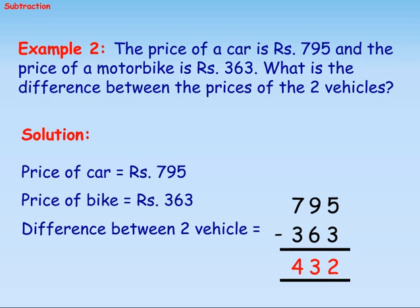Example 2: The price of a car is 795 rupees and the price of a motorbike is 363 rupees. What is the difference between the prices of the two vehicles? Solution: Price of a car equals 795 rupees. Price of a bike equals 363 rupees. Difference between two vehicles equals 795 minus 363 equals 432 rupees.